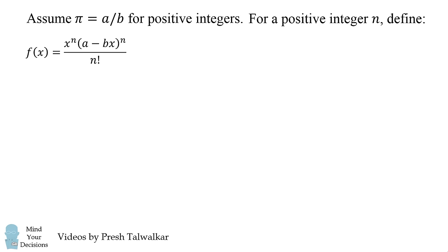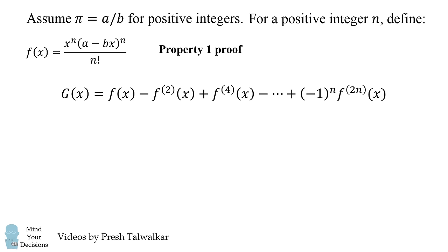Now we first need to show property 1 that the integral from 0 to pi of f(x) times sin(x) will always be an integer. I feel this is the hardest part of the proof. So bear with me. The first thing you're gonna have to do is define another function which is fairly complicated. g(x) is equal to f(x) minus the second derivative plus the fourth derivative and so on in the alternating sum of even numbered derivatives all the way up to f^(2n).